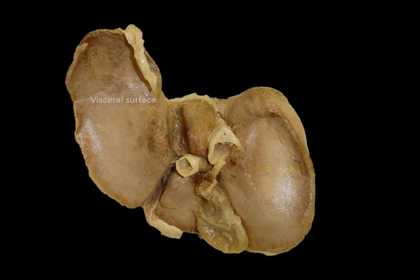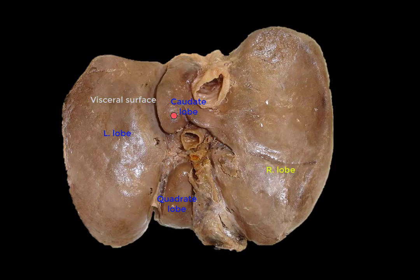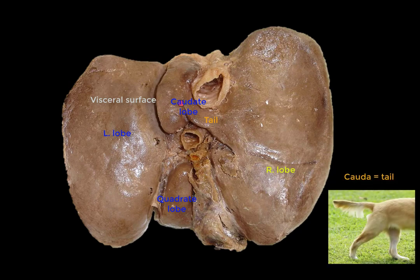If you look at the visceral surface of the liver, you can see that there are two small lobes not shown on the diaphragmatic surface. These are called the caudate lobe superiorly and the quadrate lobe inferiorly. Obviously, the quadrate lobe is quadrangular in shape. The caudate lobe has a small tail that connects it with the remaining part of the right lobe of the liver — that's why it's called the caudate lobe. Cauda means tail.